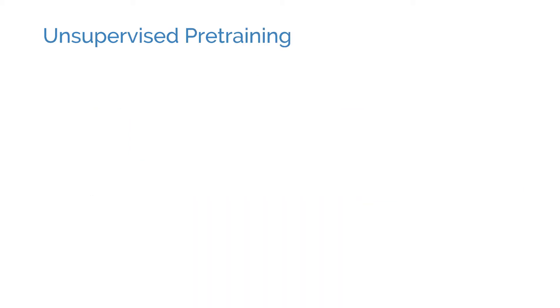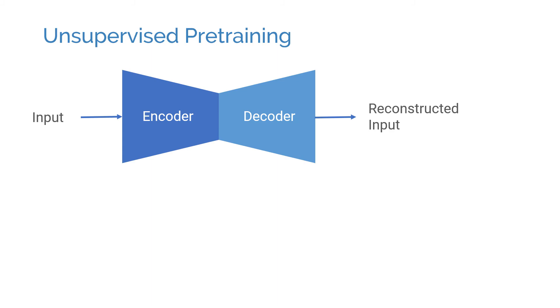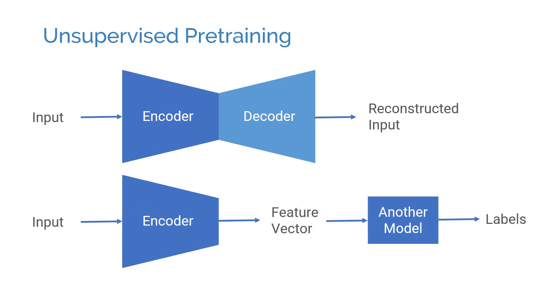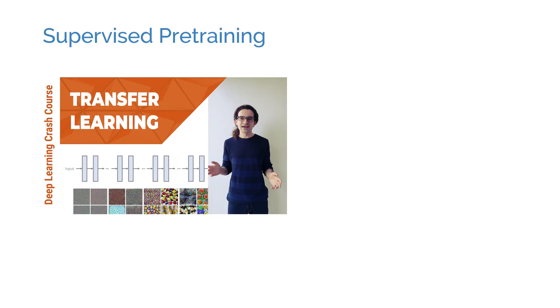One use of unsupervised learning is to learn representations. For example, if you have large amounts of unlabeled data but not so much labeled data, it's possible to pre-train a model on the unlabeled data first. We can use the encoder part of the trained model as a feature extractor, then train a separate model that uses this compact representation as inputs. For image data, this approach is not being used often anymore. In case of lack of data, it's more common to transfer features from models trained on large datasets in a supervised way. You can check out my earlier video on transfer learning to learn more about it — you can find it in the deep learning crash course playlist in the description below.